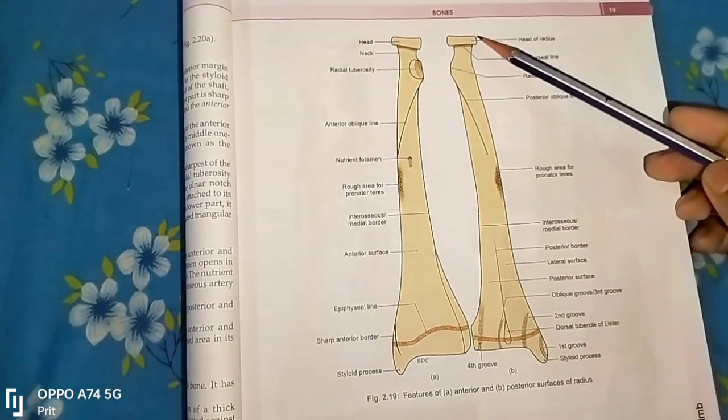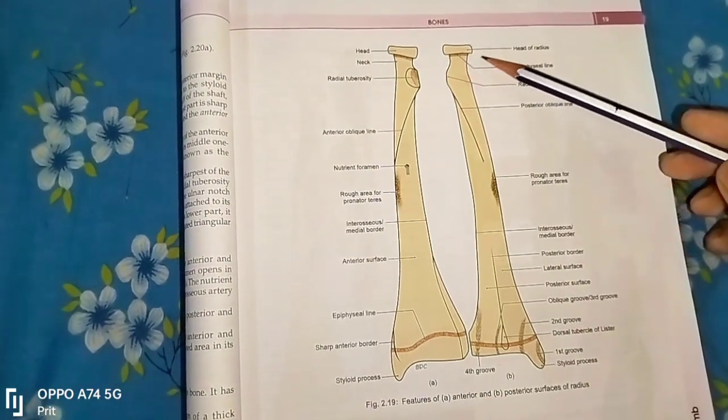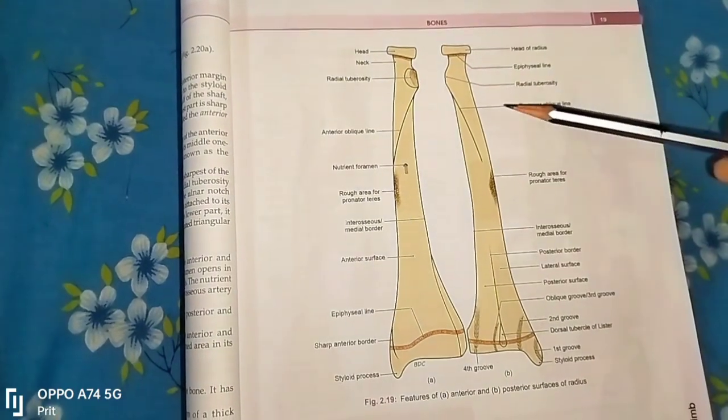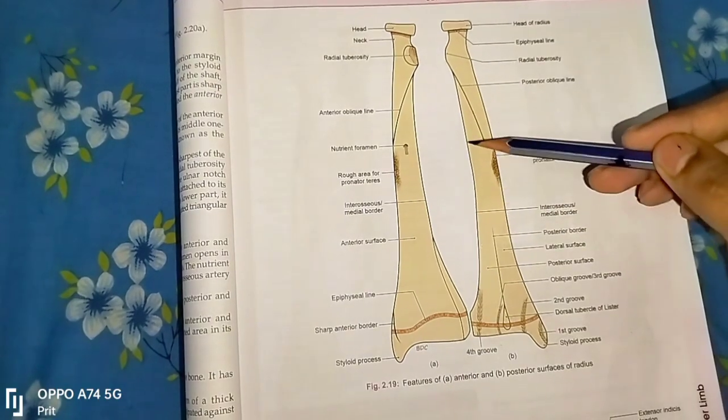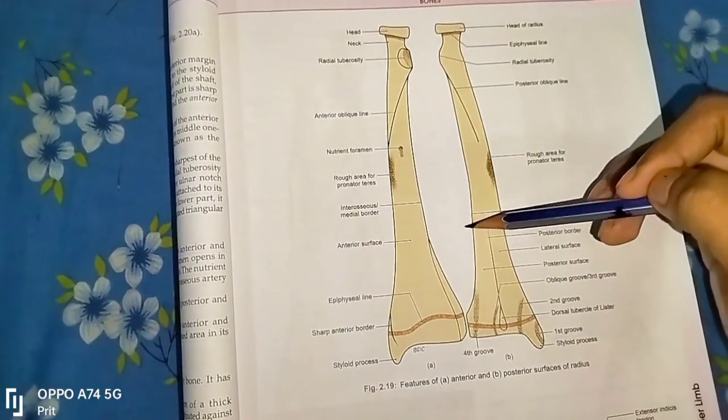Keep the bone vertically in such a way that the narrow end is superior and the wider end is inferior. Keep the sharp edge border of the shaft medially.